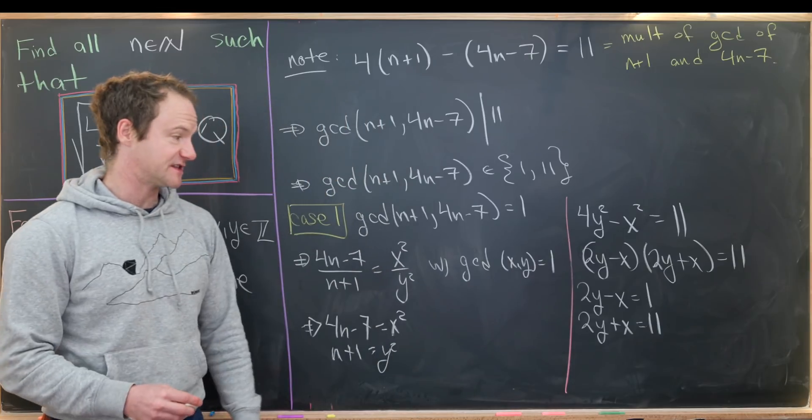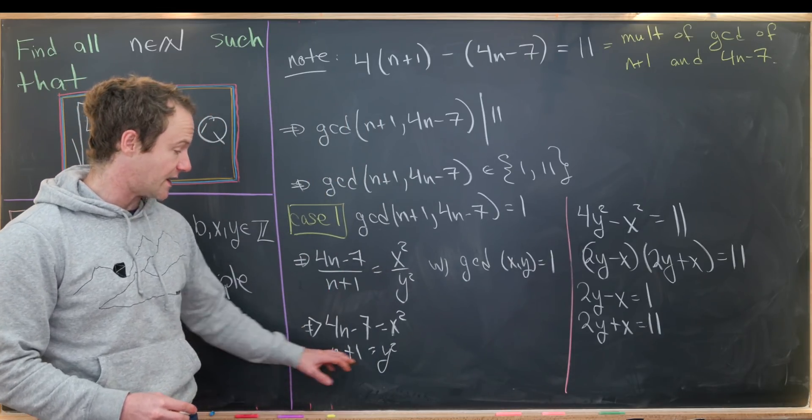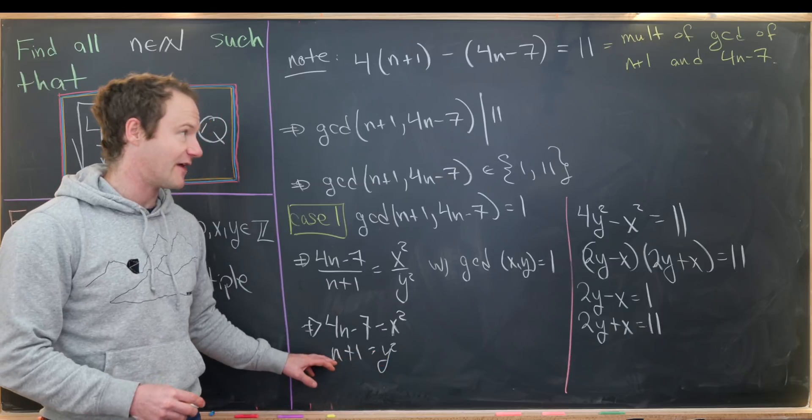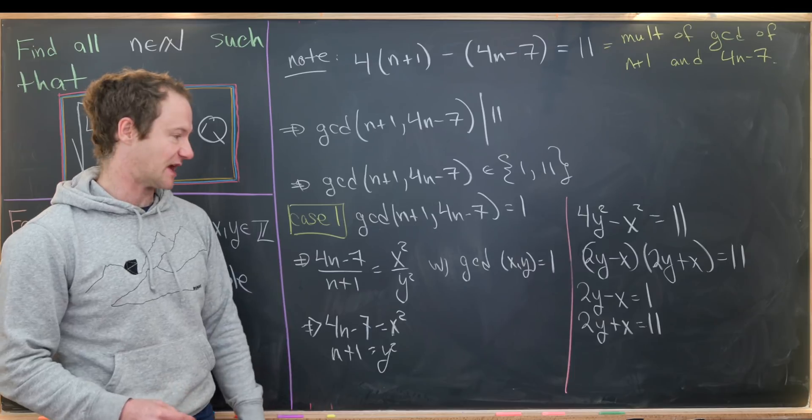So now we need to solve this equation for x and y, but we really only need to solve it for y because if we have y we have n, and once we have n we can check if we actually have a solution.